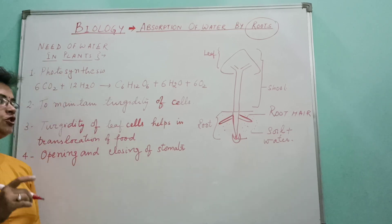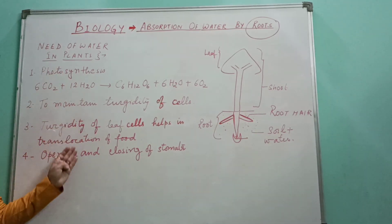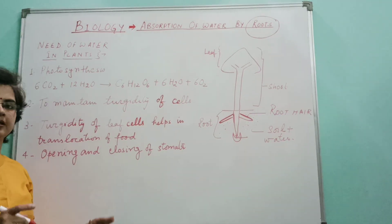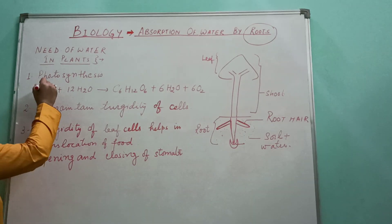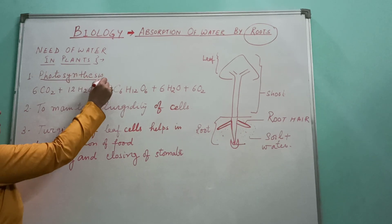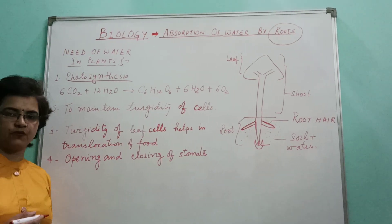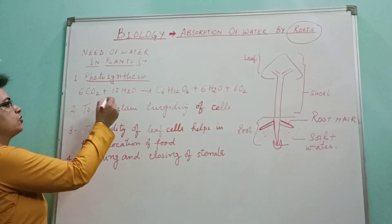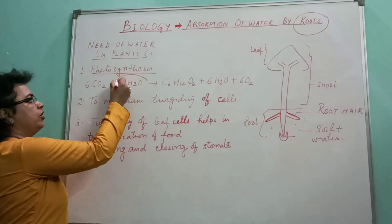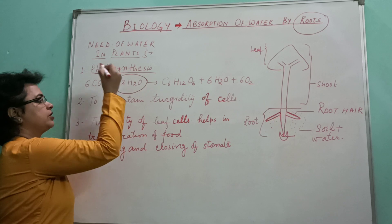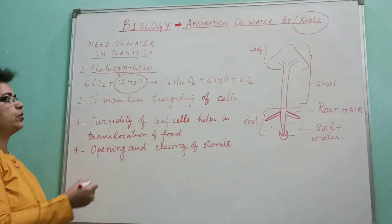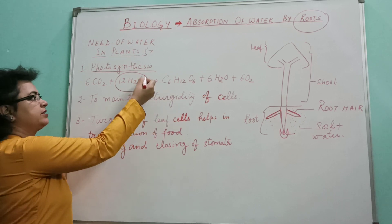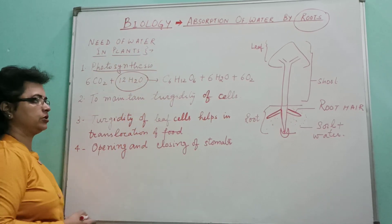First of all, we should know what is the need of water, why water is required for the plant. Number one: photosynthesis. As we know, this is the process of making food by plants. The equation shows that 12 molecules of water when combined with carbon dioxide — so water is required for photosynthesis.